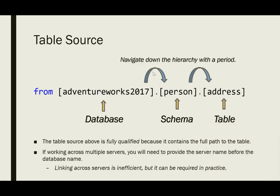Showing that more explicitly, we have the database name, schema name, and table name — which is named address. You navigate down the hierarchy with a period. So it's telling you: within the AdventureWorks2017 database, period, go to the person schema, period, and then go to the address table. You can also read it going up the hierarchy: the address table is within the person schema within the AdventureWorks2017 database.